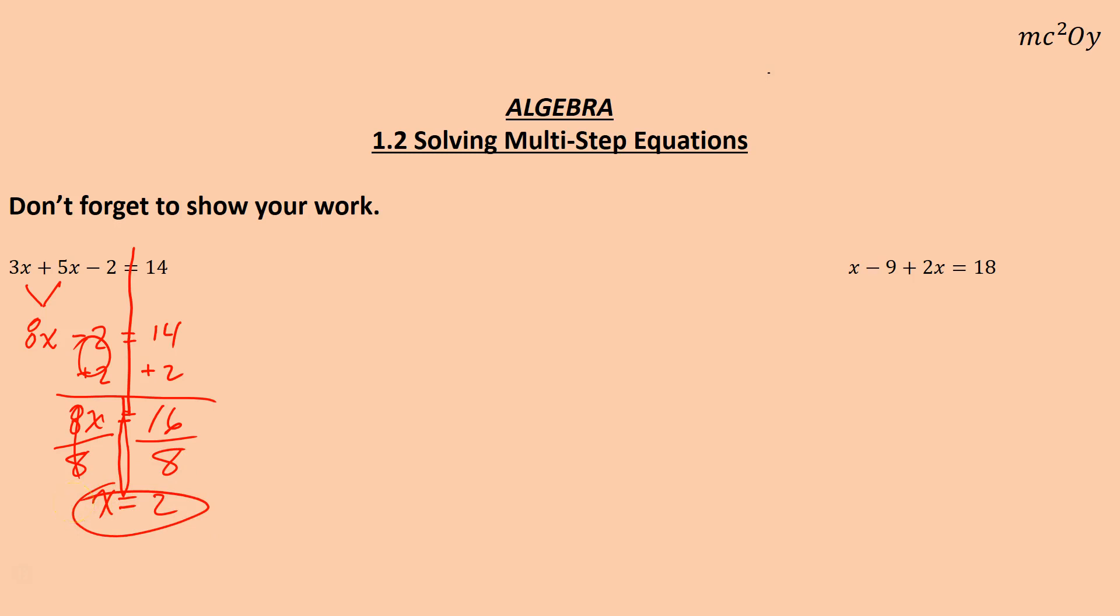Remember, you can always check your work. Plug the 2 back in. So 3 times 2 is 6, 5 times 2 is 10. 6 plus 10 is 16 minus 2, that equals 14, which is exactly what we said it equals. So we're good to go. x equals 2.